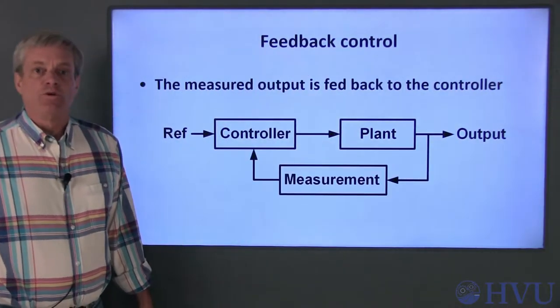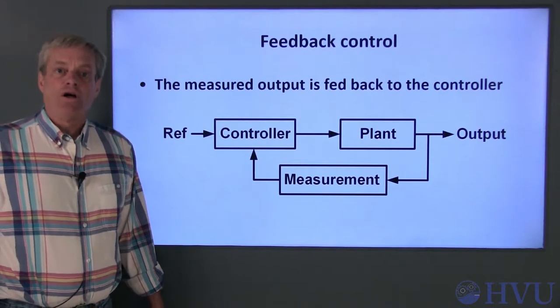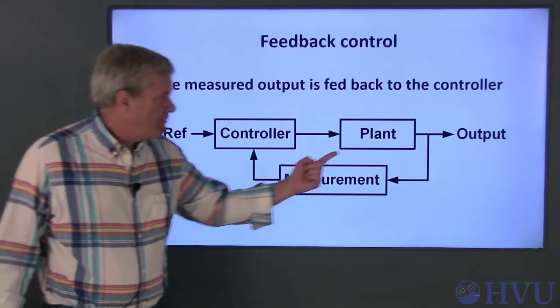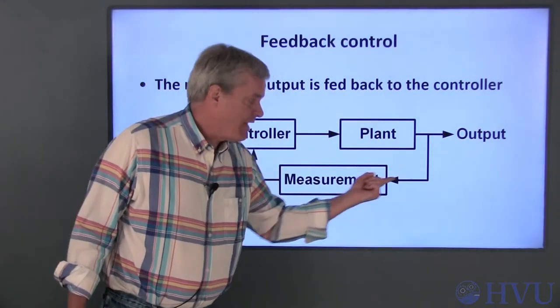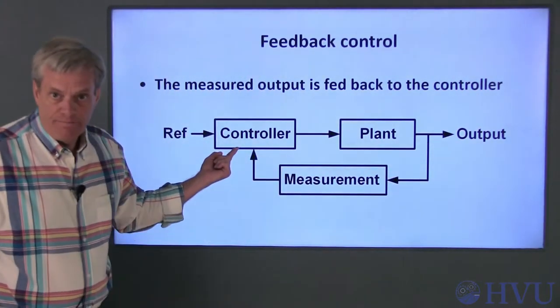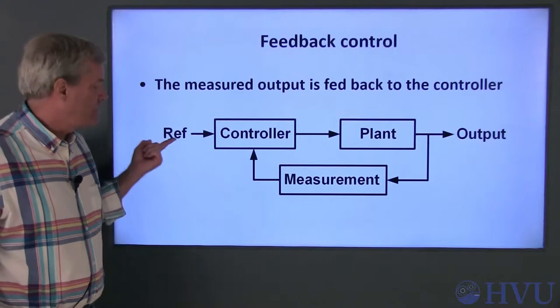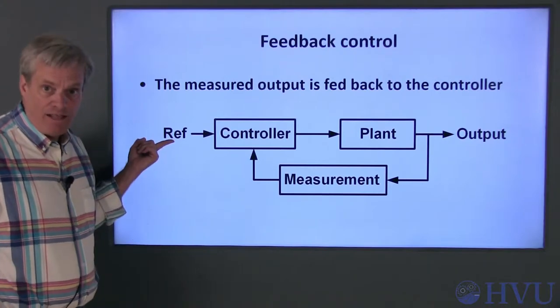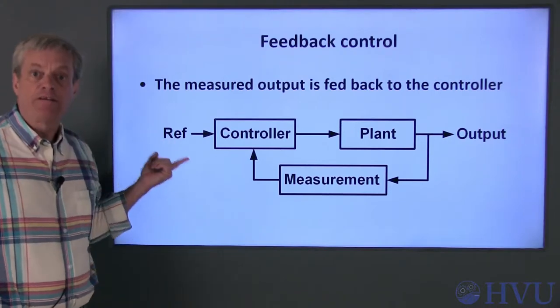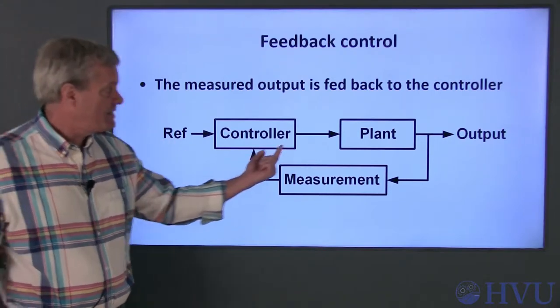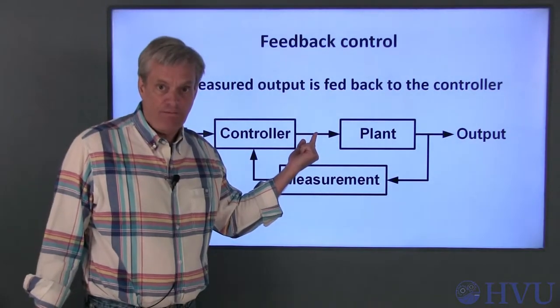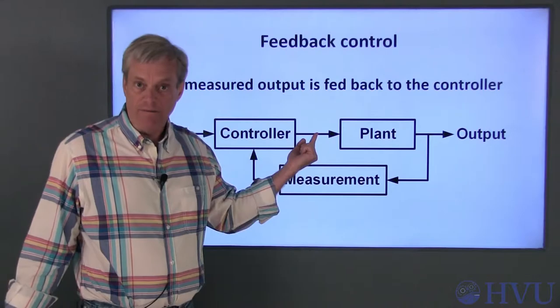In closed loop control, the controller also receives a measurement of the plant output. That measurement is compared to the desired plant output and the controller adjusts the input to the plant accordingly.